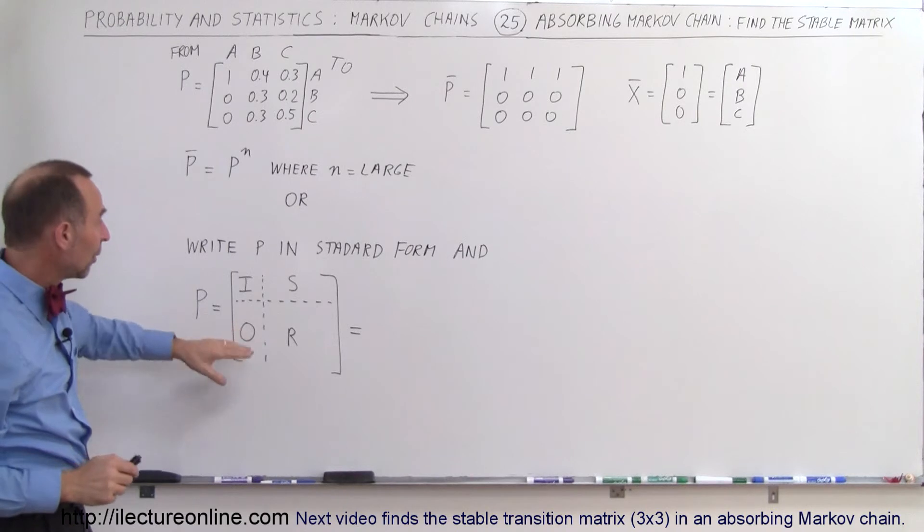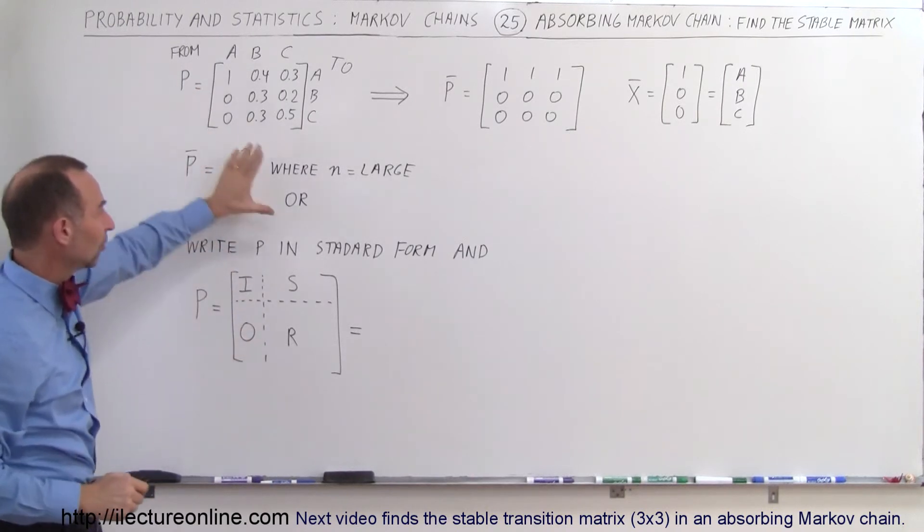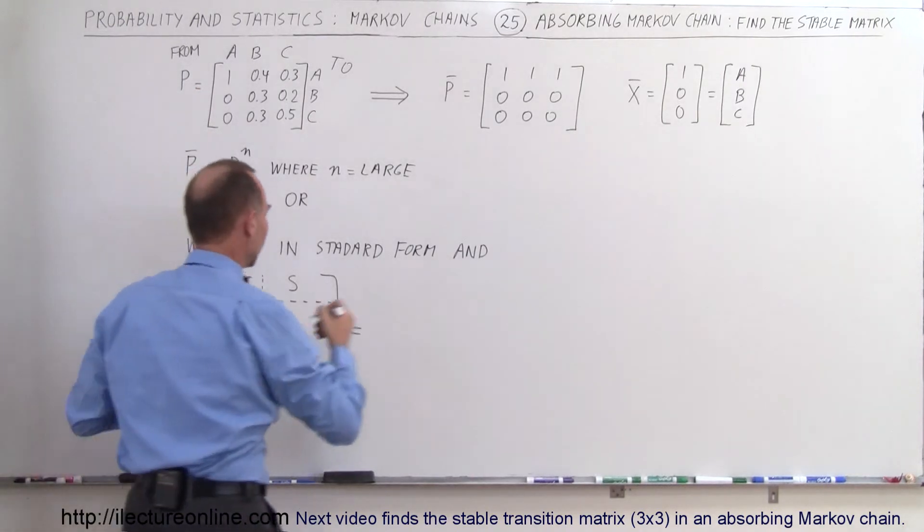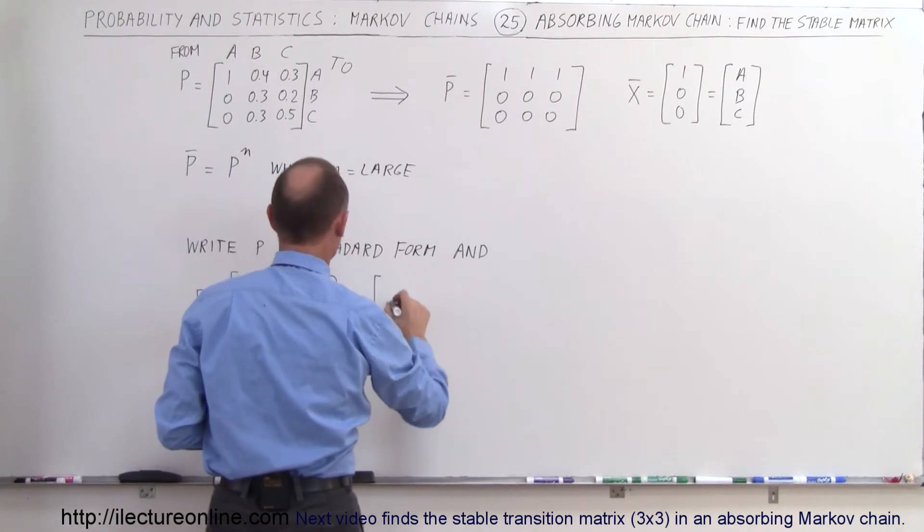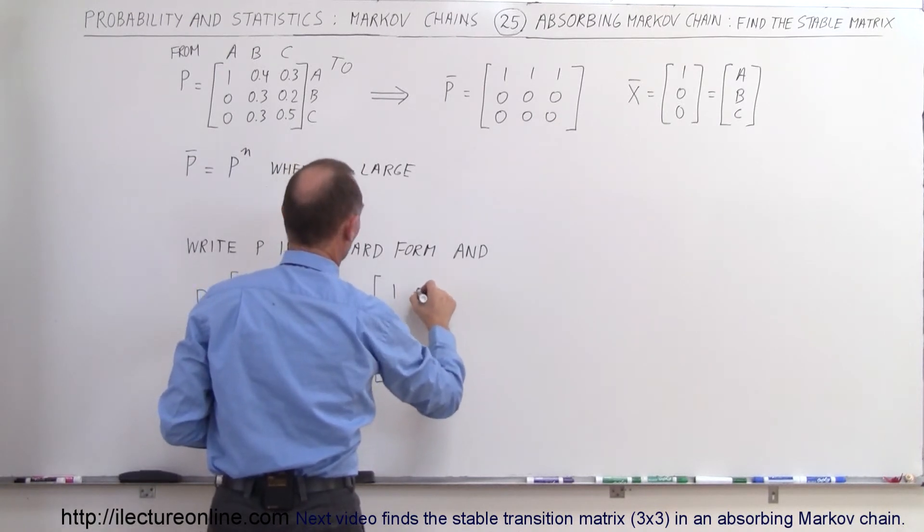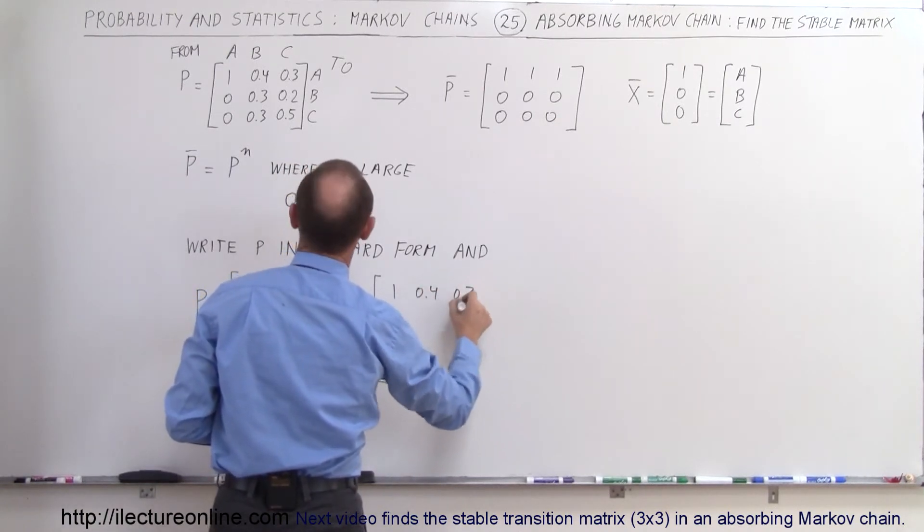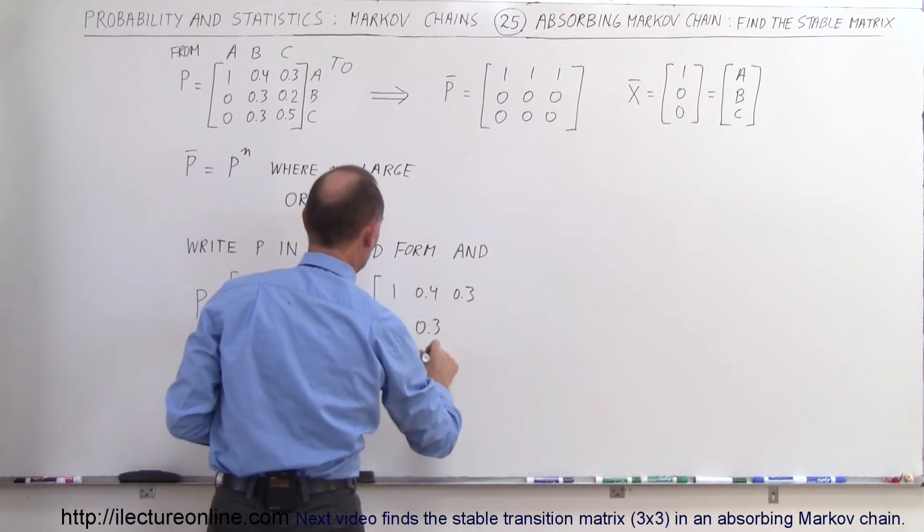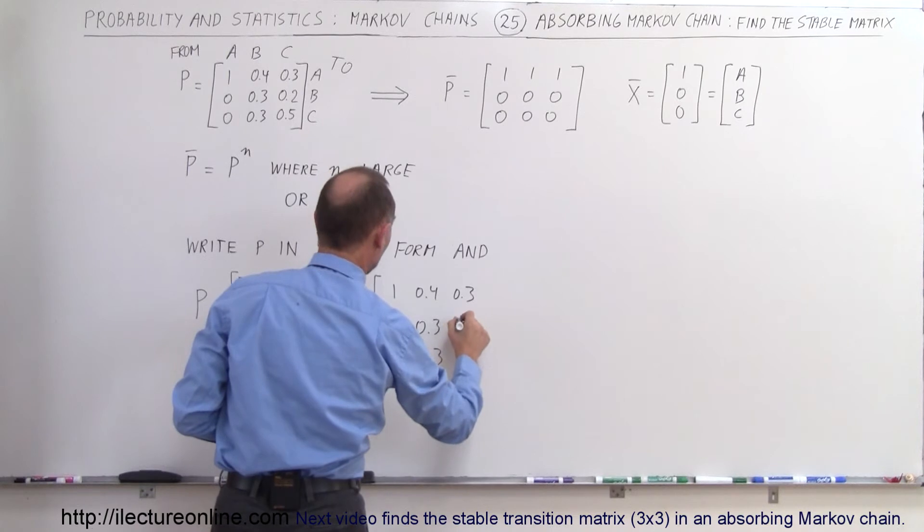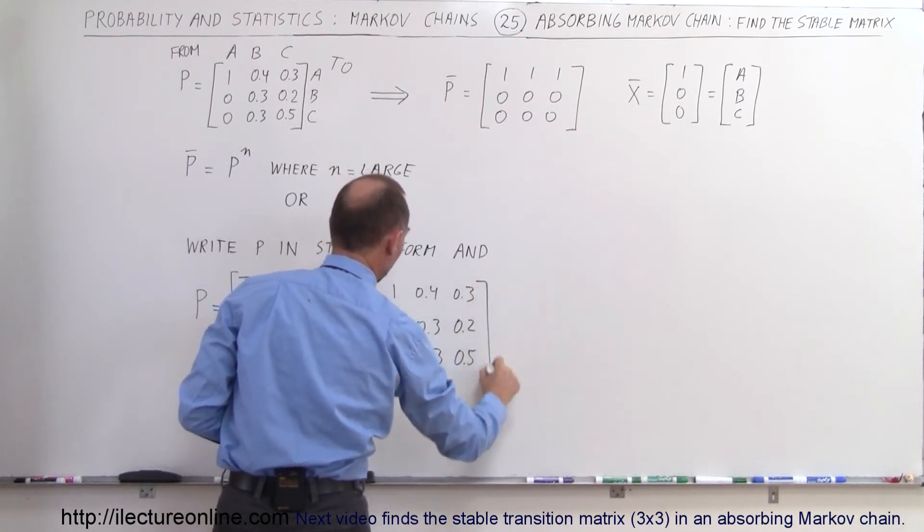Then when we go ahead and look at that, let's put this matrix in there to see what it looks like. So when we put our transition matrix in there we get a 1, 0.4, 0.3, 0.0, 0.3, 0.3, and a 0.3, 0.2, 0.5 like so.